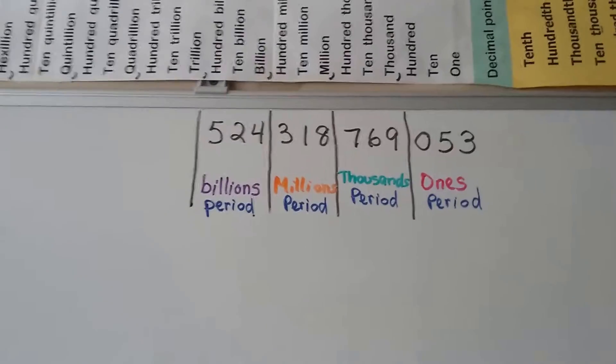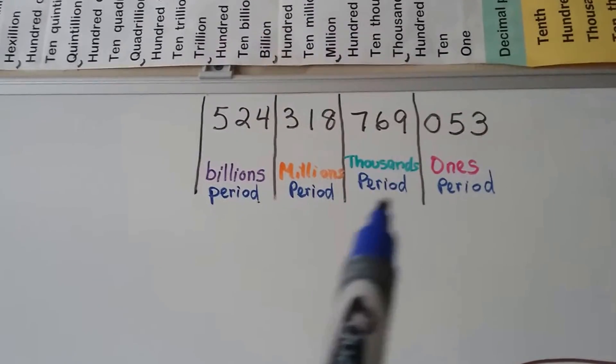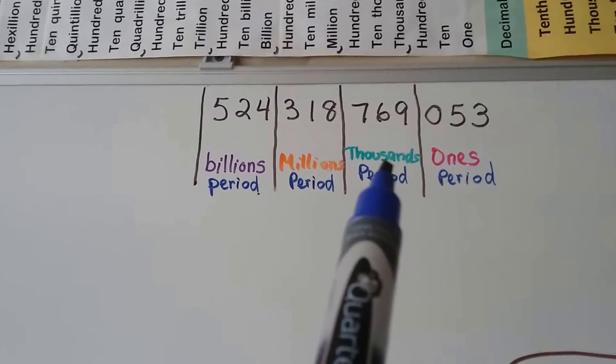So just remember, in our place values, this is the ones period, with hundreds, tens, and ones. This is the thousands period, with hundreds, tens, and ones.